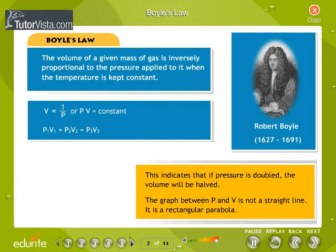This indicates that if pressure is doubled, the volume will be halved. The graph between P and V is not a straight line. It is a rectangular hyperbola.